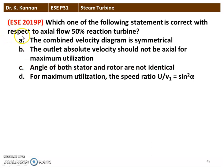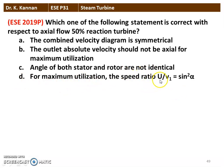Next question from the 2019 question paper — which one of the following statements is correct with respect to axial flow 50% reaction turbine? The combined velocity triangle is symmetrical. The outlet absolute velocity should be axial for maximum utilization. Angles of both the stator and the rotor are identical. For maximum utilization, V_B / V1 = cos²α. Option 1 is the correct answer — the combined velocity triangle is symmetrical.